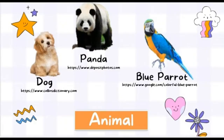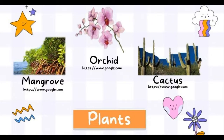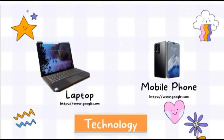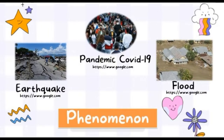Starting with the first type: animals — examples include dog, panda, parrot, worm, bird. Next, plants — examples include mangrove, orchid, cactus. Next, technology — examples include laptop, mobile phone. The last is phenomena — examples include earthquake, pandemic COVID-19, and flood.